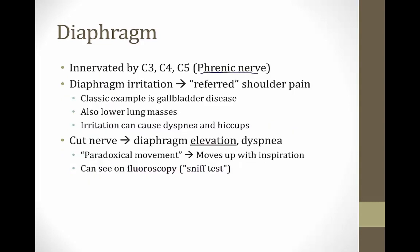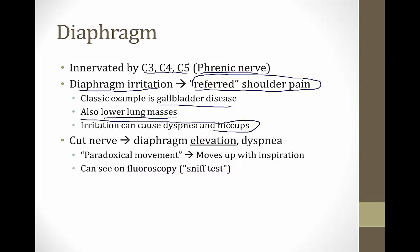The diaphragm is innervated by the phrenic nerve from C3, C4, and C5 — remember: C3, C4, and C5 keep the diaphragm alive. Irritation to the diaphragm causes referred pain to the shoulder because C3, C4, and C5 also carry shoulder pain fibers. Classic examples include gallbladder disease and lower lung masses. Diaphragm irritation can also cause dyspnea and hiccups.